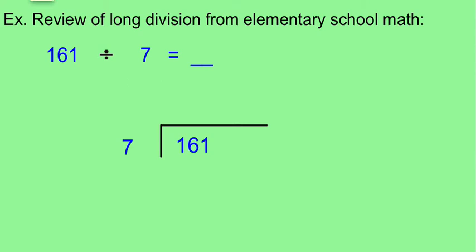So we want to take 161 and divide it by 7 and find out what we get. Sometimes we get remainders. Be careful that your numerator is going to go underneath the division symbol and then your denominator 7 will go in front.